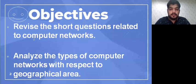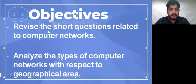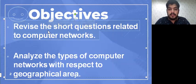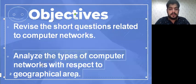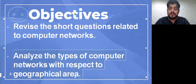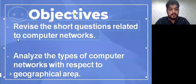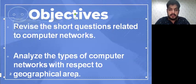First we have to start from the objectives. The first objective is to revise the short questions related to computer networks. The second objective is to analyze the types of computer networks with respect to geographical area. We will cover both these objectives in today's lesson.